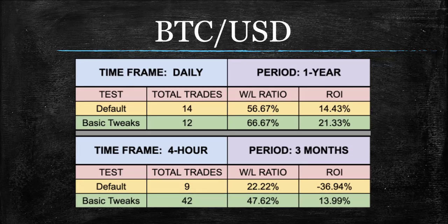Now onto Bitcoin. These results are all over the place — great ROI on the daily, really great win-loss ratios, but a lot smaller on the trades. Take all of these factors into consideration. But at the end of the day, I thought this was a really great indicator to bring to you because it's just so all over the place. In the hands of an experienced trader, there could be some real value to be extracted here.